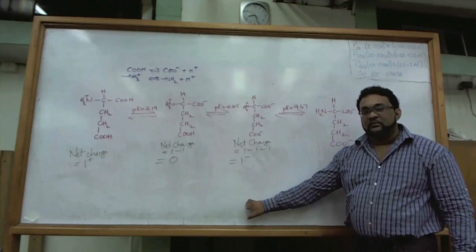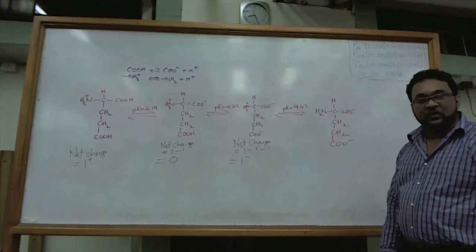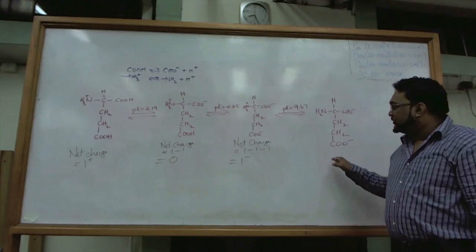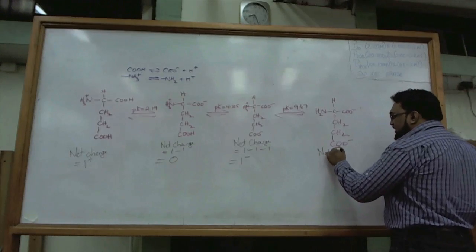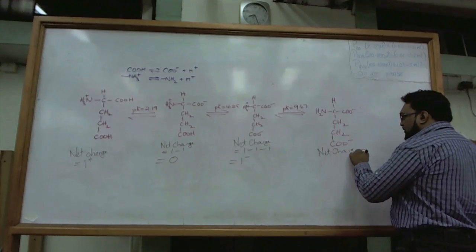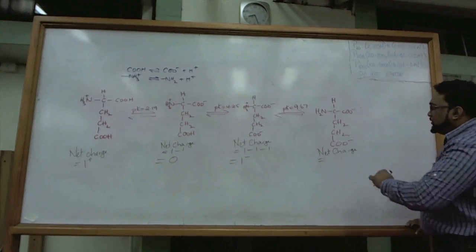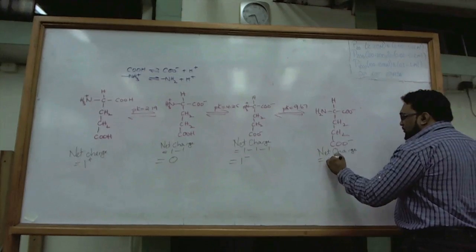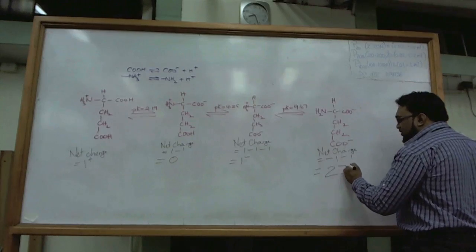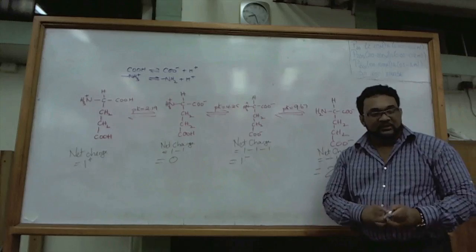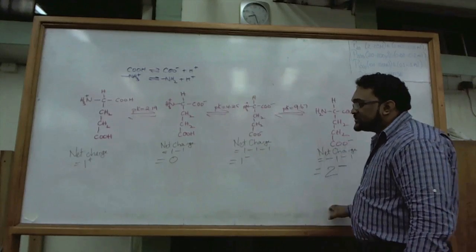For the final structure, there is no plus anymore. There's this minus one and this minus one, so you get a net charge of two minus. So we have completed the second part of that question, which is to calculate the net charge.